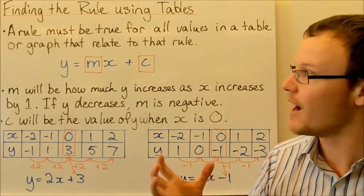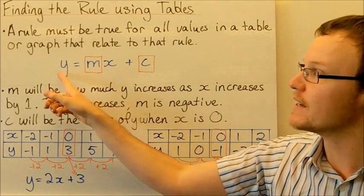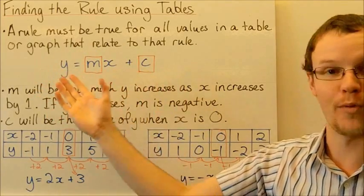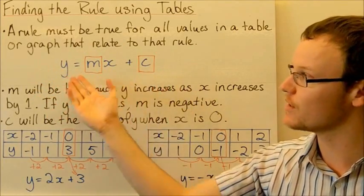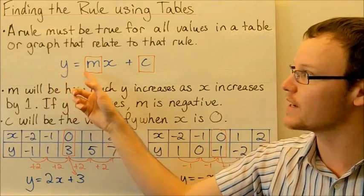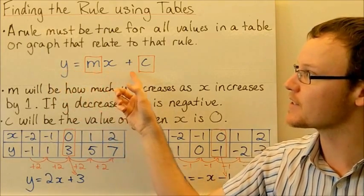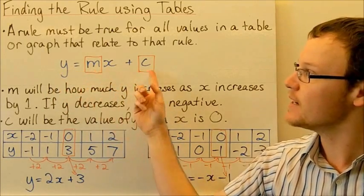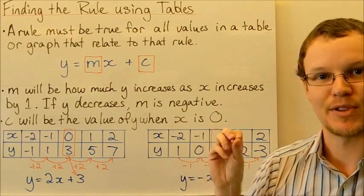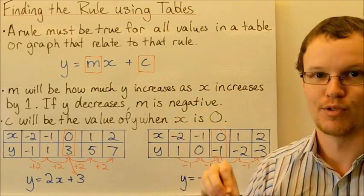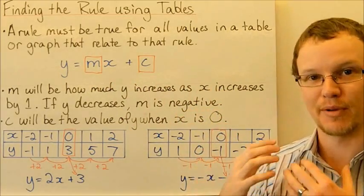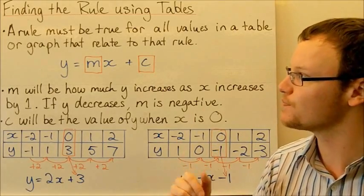So for a linear rule, a linear graph, we can get a rule that has this format. It looks like y equals mx plus c, where m and c we can replace with numbers to fit our rule, to suit the graph that we've got.